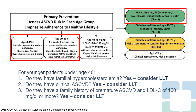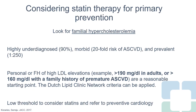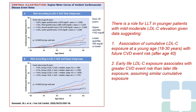For younger patients under the age of 40, we have to ask ourselves a couple of questions. Can this patient have familial hypercholesterolemia? Things that tip us off for this condition would be an LDL cholesterol greater than 190, or an LDL greater than 160 with a family history of premature atherosclerotic cardiovascular disease. Patients who have this condition or one of these factors may be reasonable candidates for statin therapy for primary prevention. Familial hypercholesterolemia is highly underdiagnosed, and the prevalence is about one in 250. We want to look for certain lab values and features of the clinical history, such as a family history of premature atherosclerotic cardiovascular disease, as a starting point for diagnosing this condition.